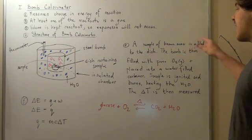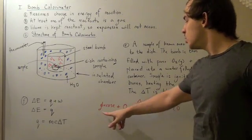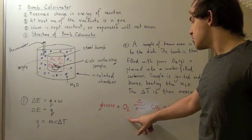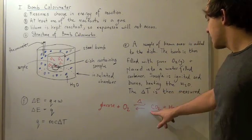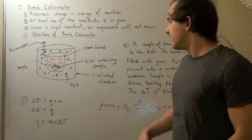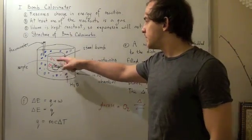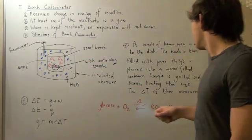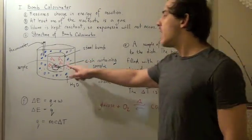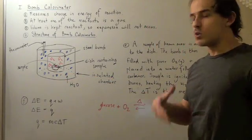A sample of a known mass is added to a dish. So let's look at the combustion of glucose in the presence of oxygen plus some heat. It gives us carbon dioxide and water. Let's place a small sample of glucose into our dish found inside the steel bomb and fill our bomb with oxygen because oxygen is required for burning to occur.